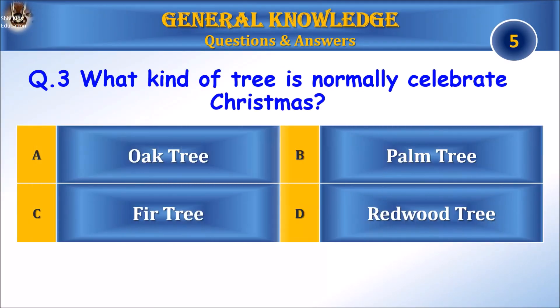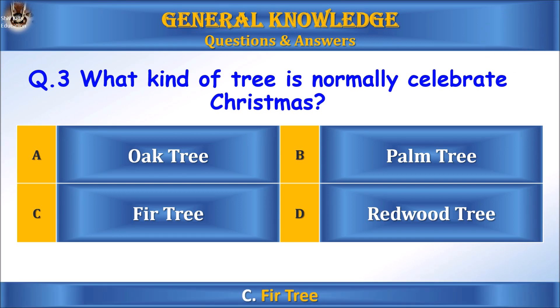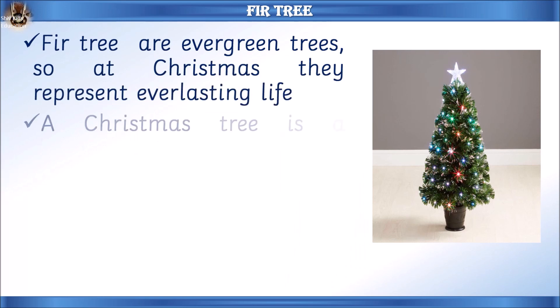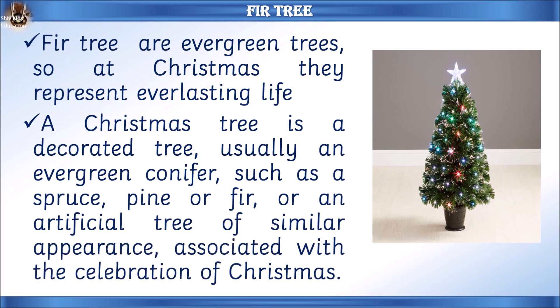Question 3: What kind of tree is normally used to celebrate Christmas? A) oak tree, B) palm tree, C) fir tree, or D) redwood tree. Answer: C) fir tree. Fir trees are evergreen trees, so at Christmas they represent everlasting life. A Christmas tree is a decorated tree, usually an evergreen conifer such as a spruce, pine, or fir tree, or an artificial tree of similar appearance, associated with the celebration of Christmas.